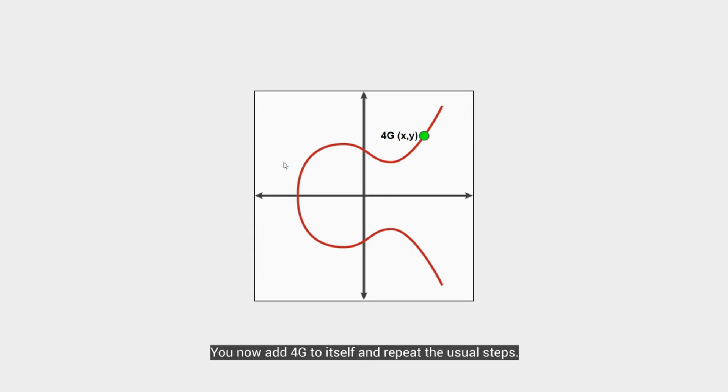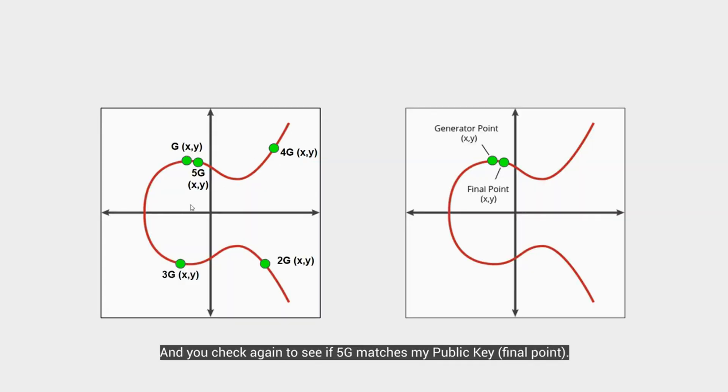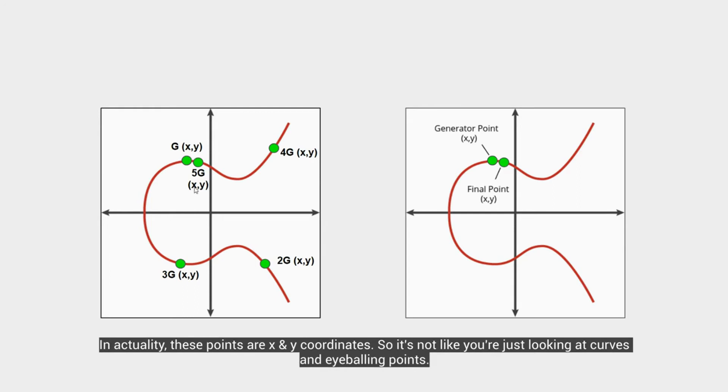You add 4g to itself to get the tangent line that results in the third intersection point of negative 5g, which is then reflected over the x-axis to give us the point 5g. So looking here, we might have something. And in actuality, 5g is actually x and y points. And so is my final point, x and y.